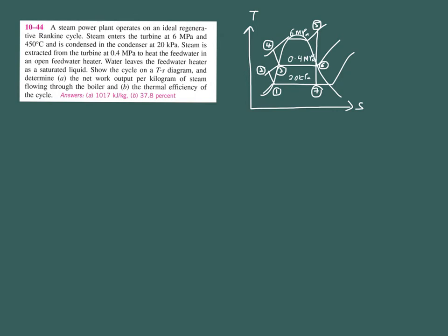How are we going to solve this? The same thing with your simple Rankine ranking cycle and your reheat ranking cycle — you start with the states that you have two known values, because you need to read your property table, therefore you need two known values.